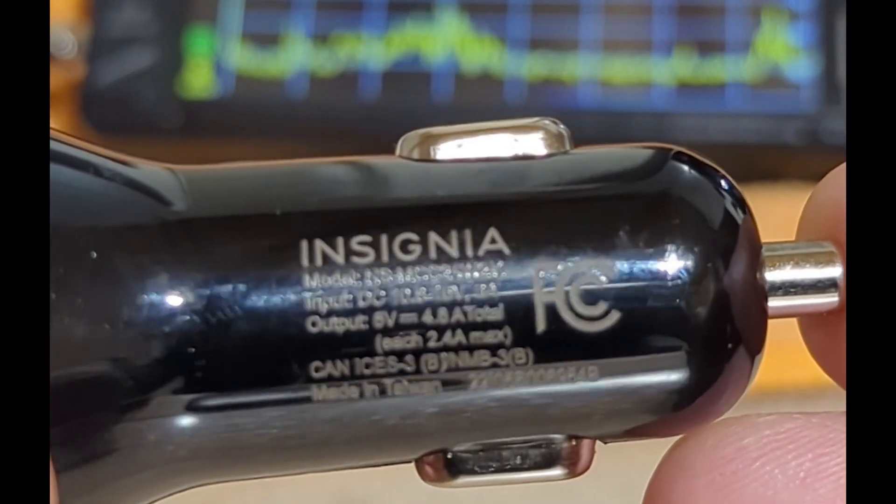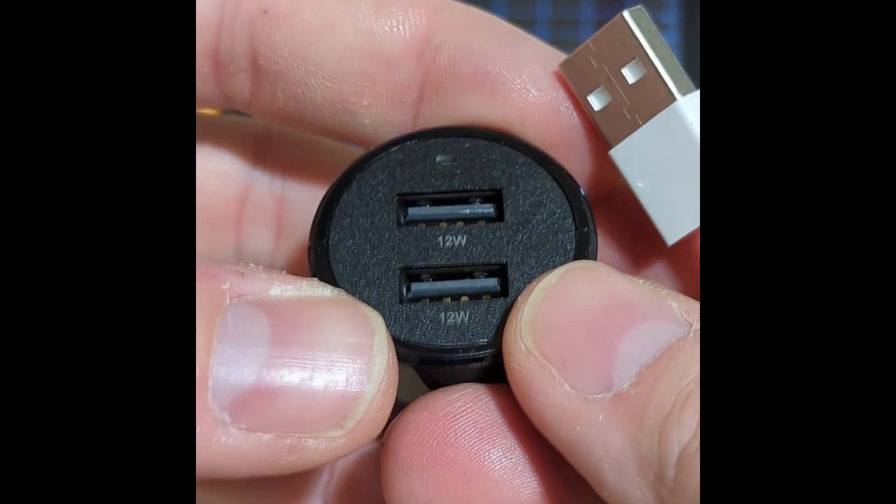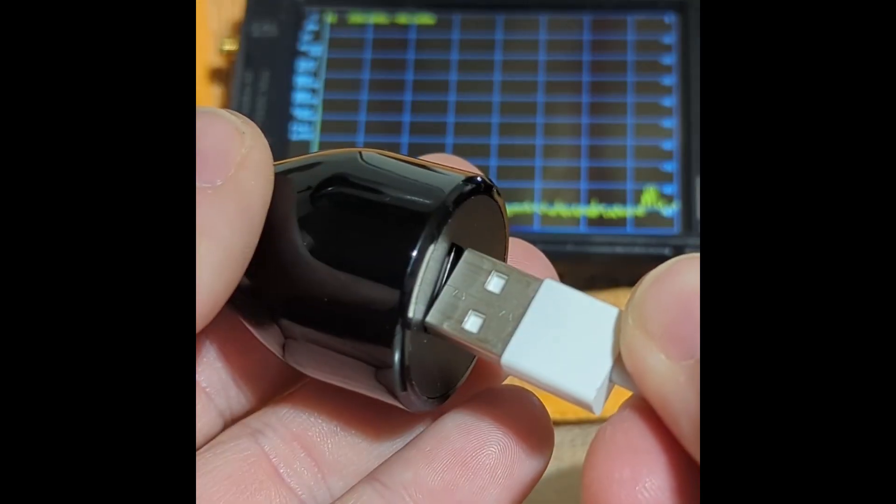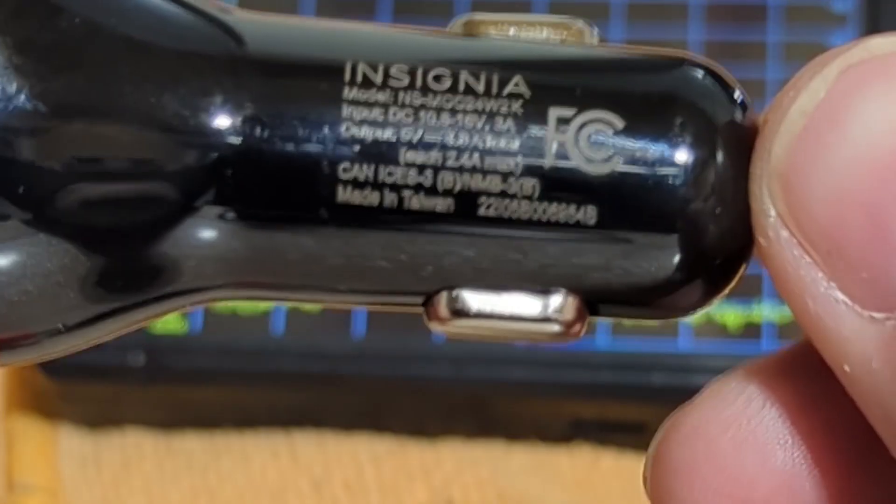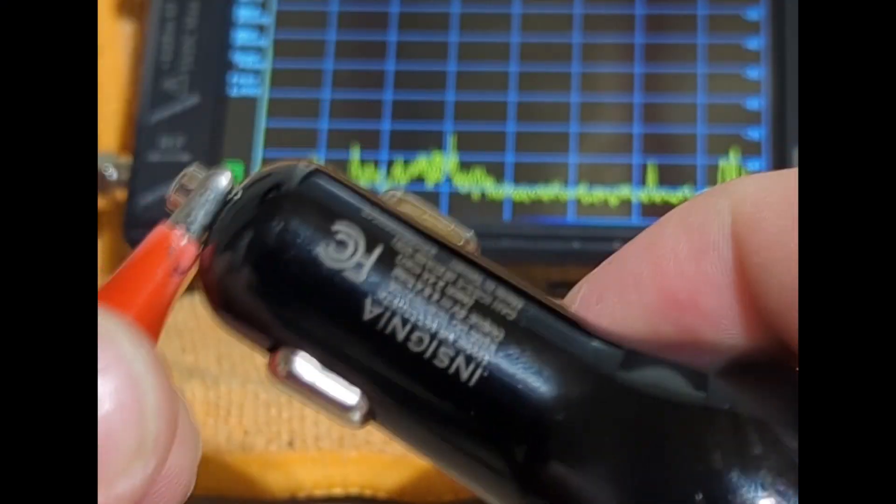Next is an Insignia. The model is NS MCC 24W 2K. Insignia is Best Buy's own brand and in fact I did buy this at Best Buy last week for $7. Note that it's got an FCC marking which certainly inspires hope.